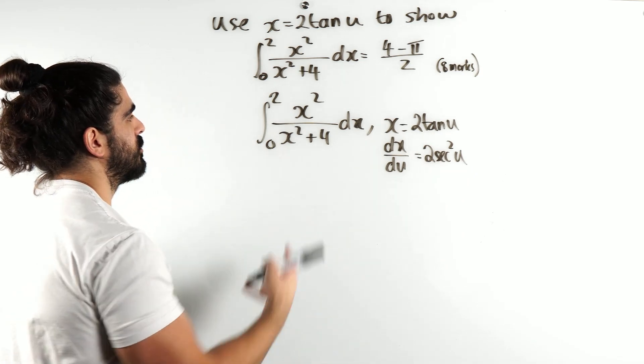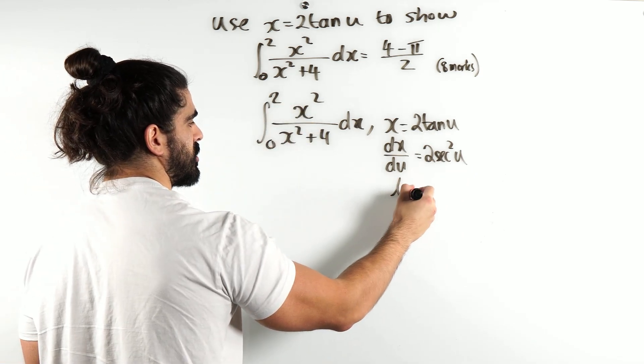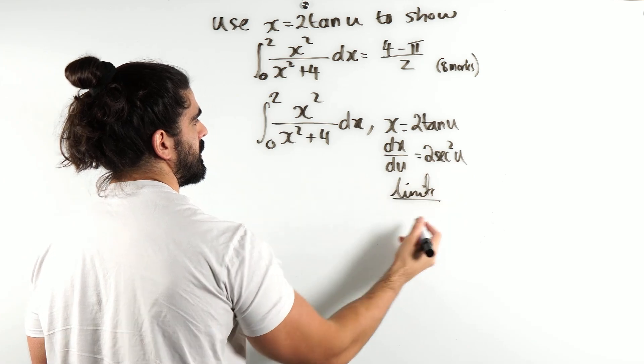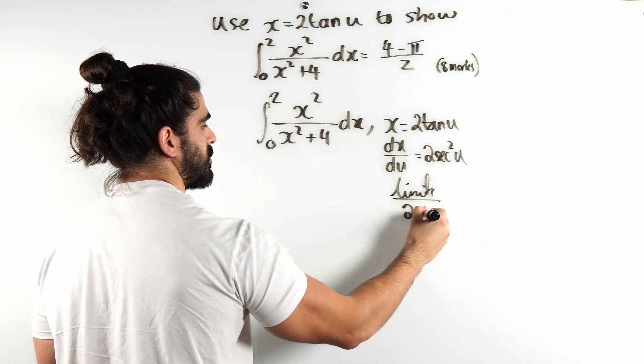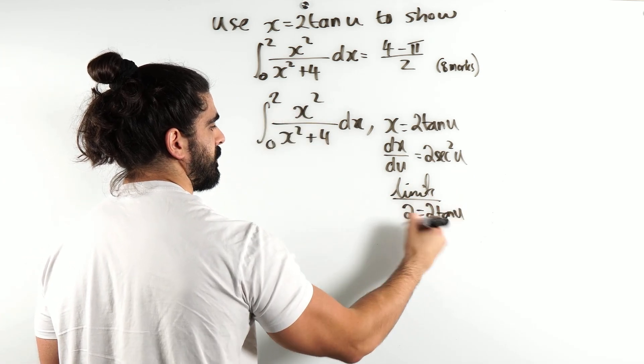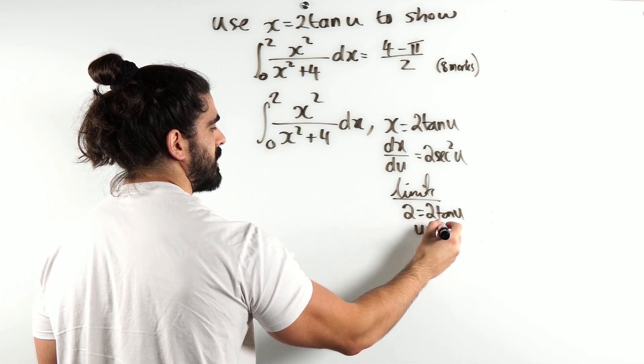The next thing we want to substitute is the limits. So let's check our limits. When x = 2, we get 2 = 2tan(u). Divide by 2, we get 1, inverse tan of 1 is π over 4.